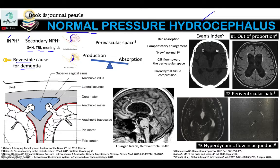So how does this happen? It's a bit strange that you have big ventricles but normal pressure. To understand this, let's go back to some of the theories. The balance in CSF flow is a balance between production and absorption, with absorption occurring at the level of the arachnoid villi. A third concept we need to understand is the perivascular space.